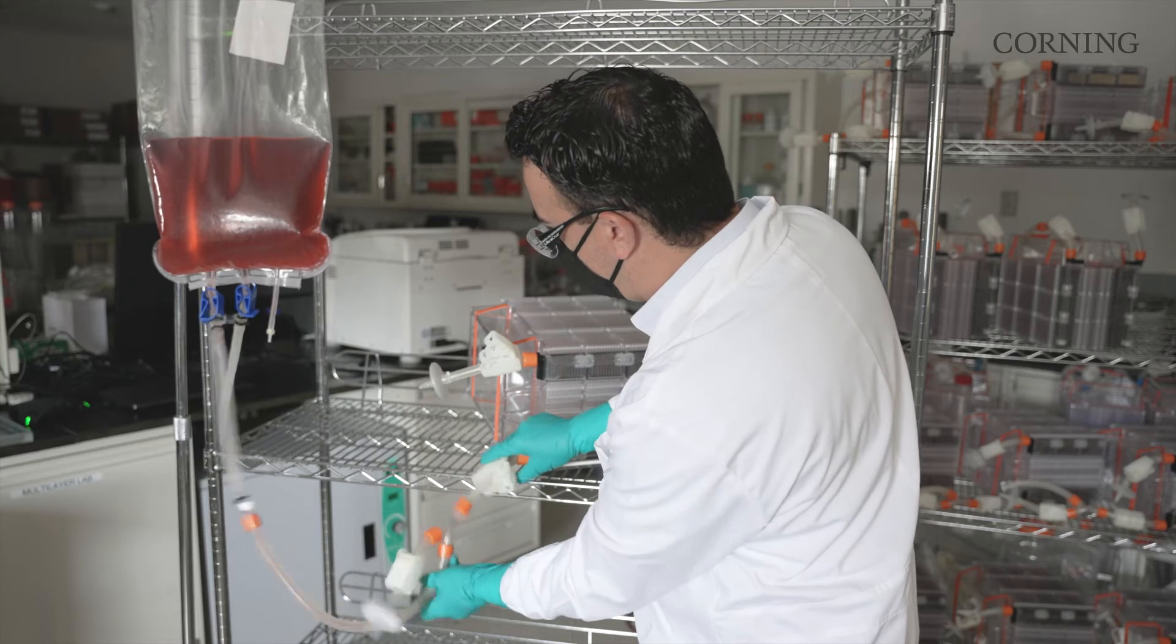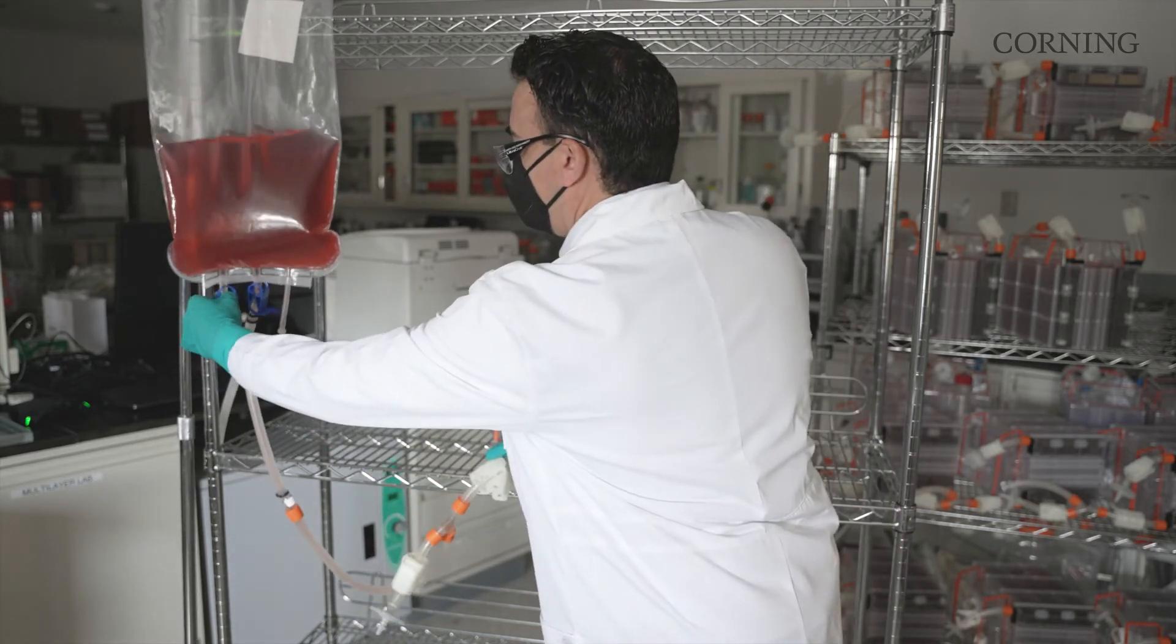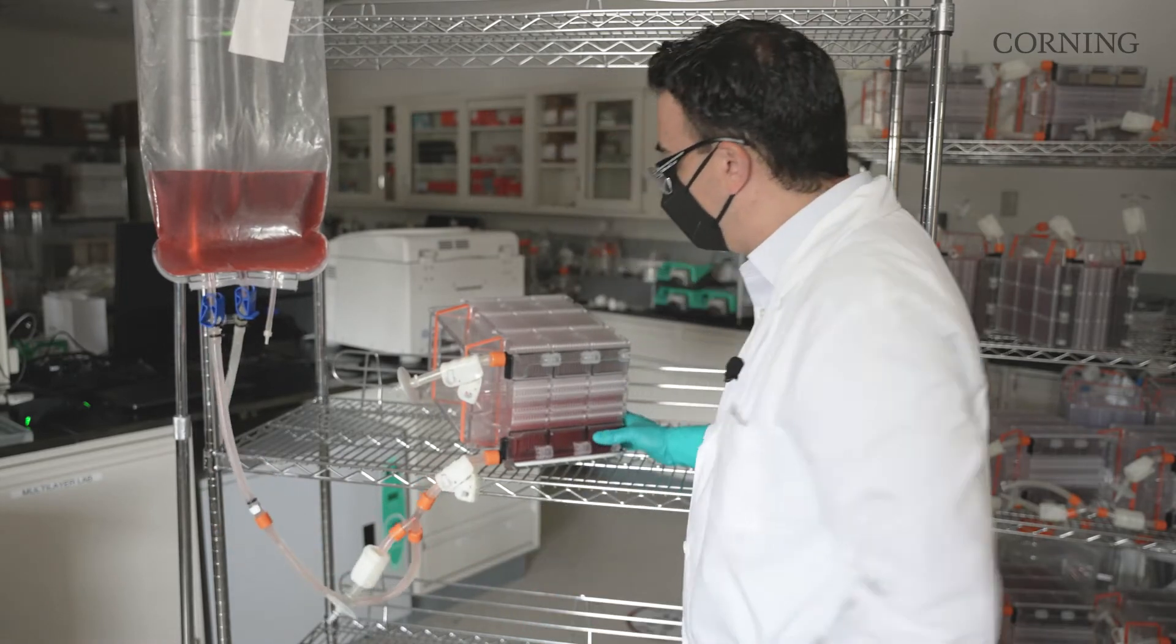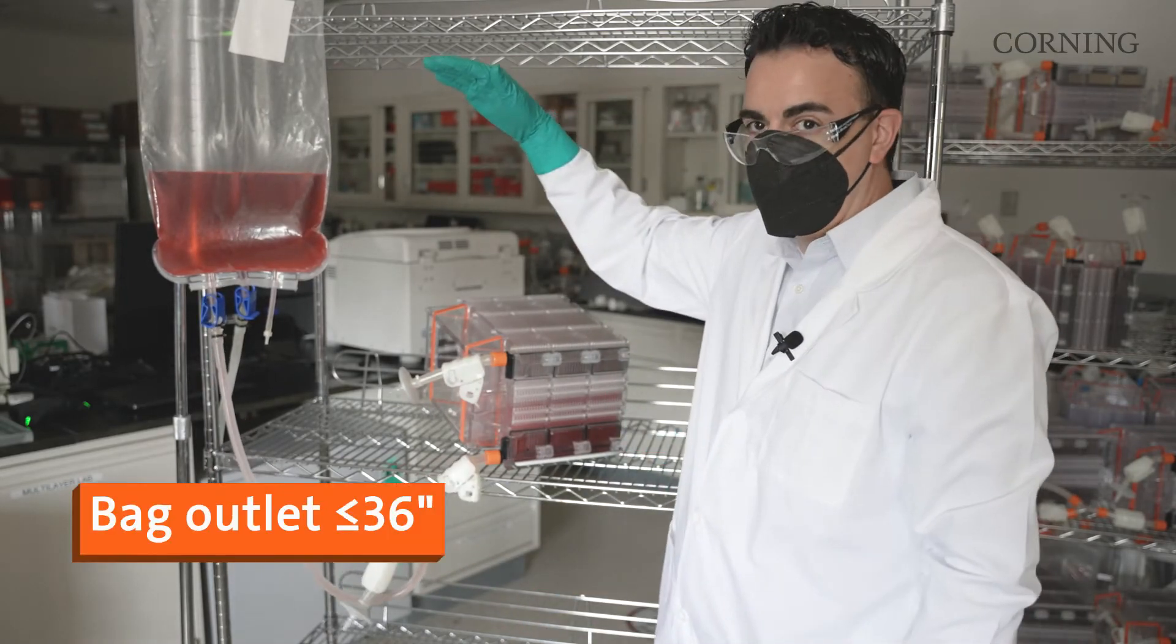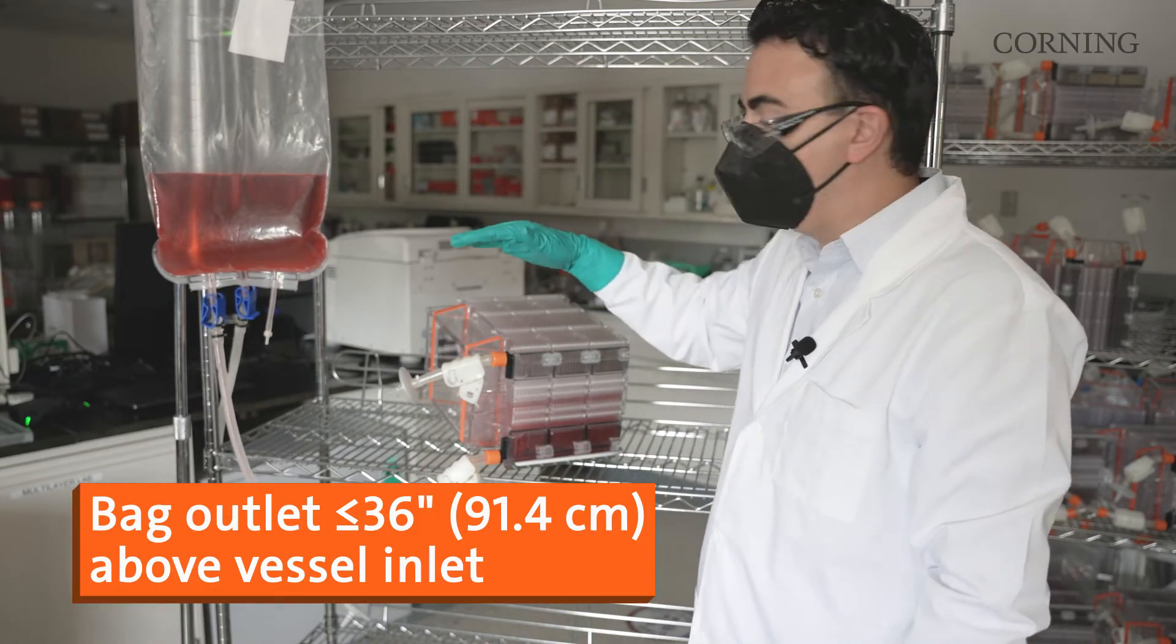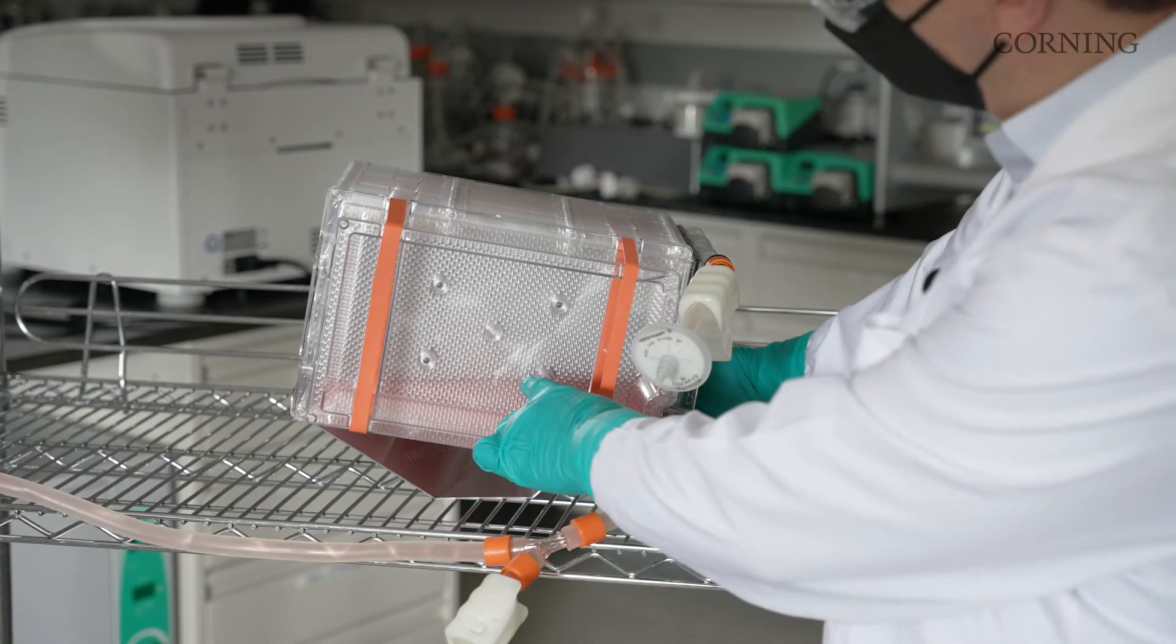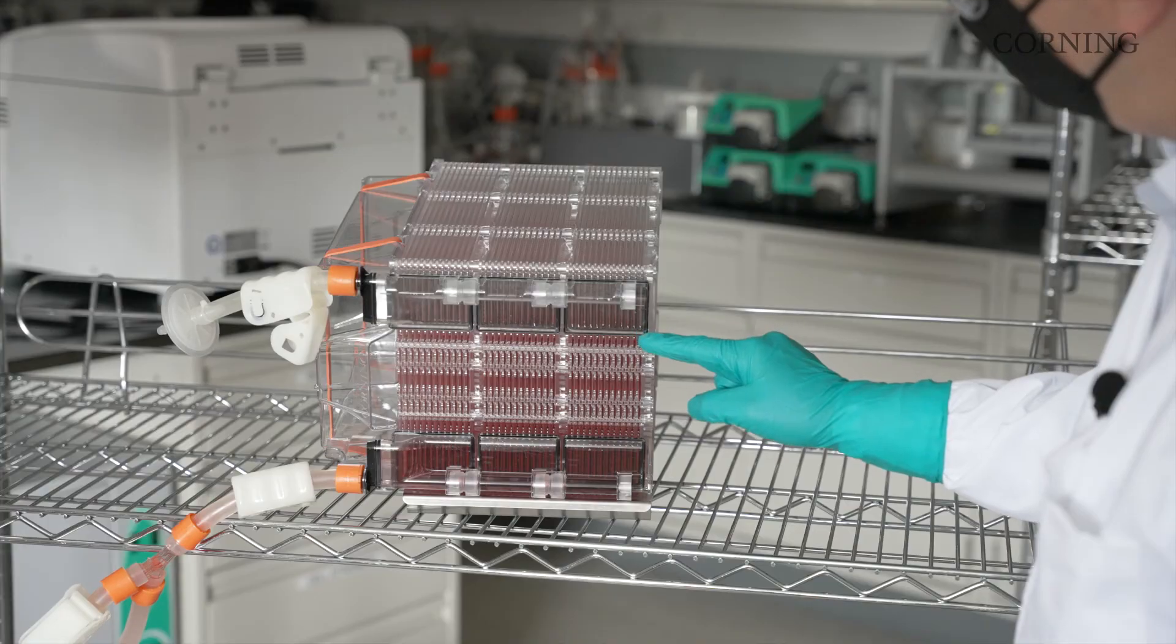So now we have media flowing into the line. Again, we'll just make sure that we've de-pinched our tubes. You don't want to exceed the 2.3 liters per minute, so that height variance of 36 inches will keep you within the tolerances of that 2.3 liter per minute fill rate. So now we're filling, we're at about a quarter of the way filled, we're starting to see initial media building.